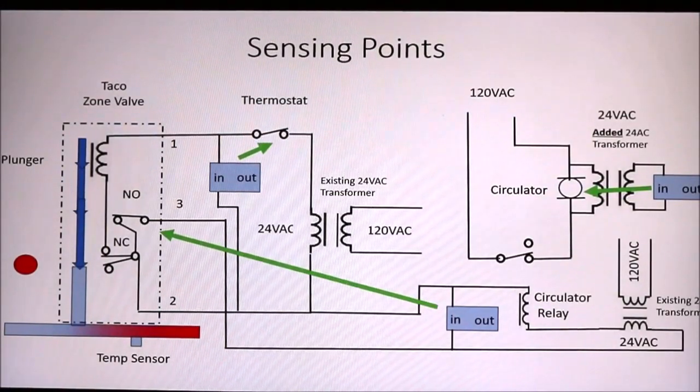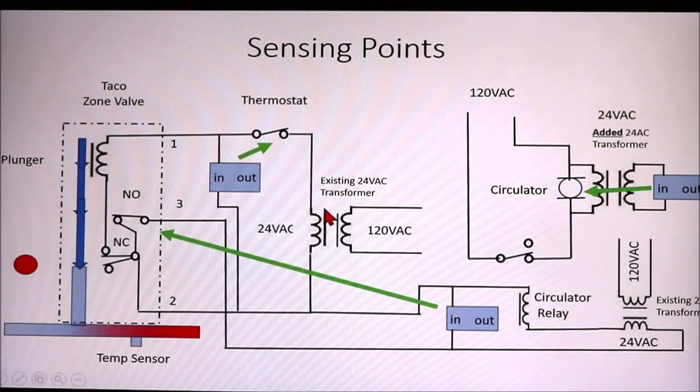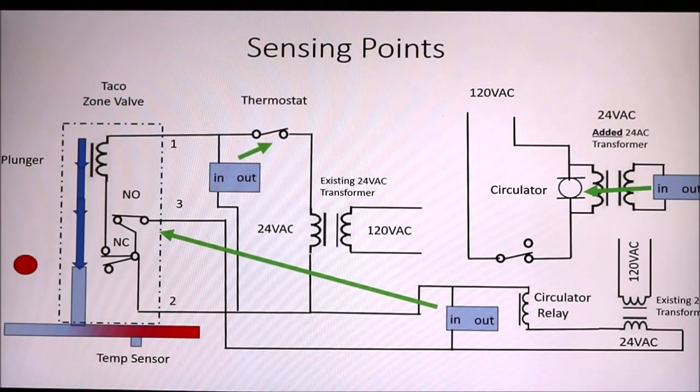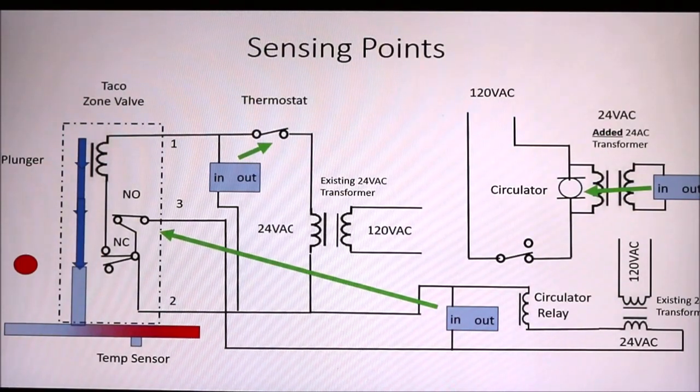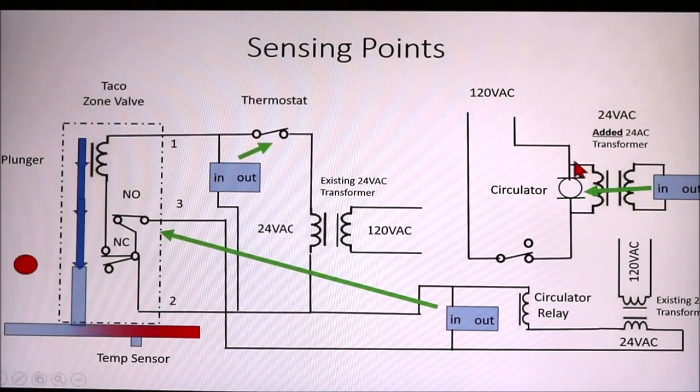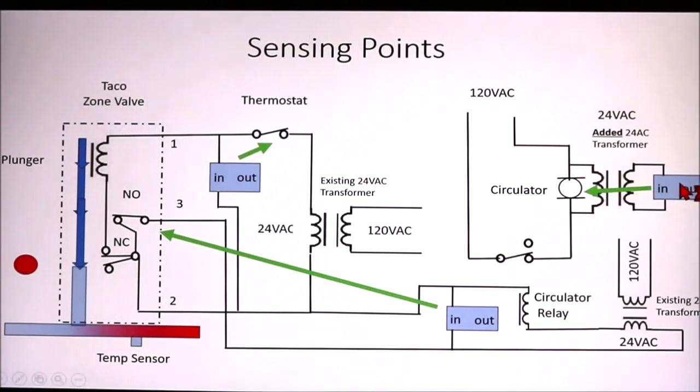Now, these transformers, the other transformers, as I mentioned, are existing transformers in your system. They're needed there, so they're fine. This one would have to be added. And 24 volt AC transformers are pretty common. They're anywhere from $10 to $15 a piece. So we'd hook one up across the circulator. So when the circulator is seeing 120 volts, it would go through that circuit I showed you earlier and put out a voltage to show that the circulator is working.